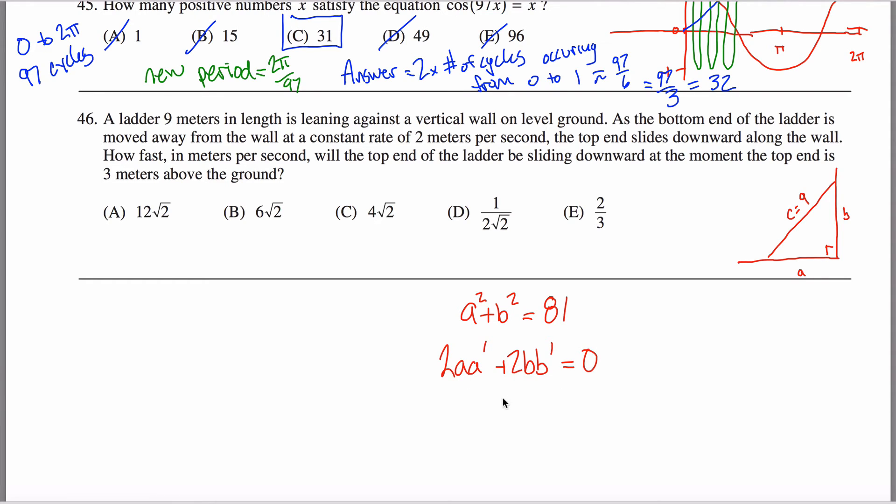What I now have is an equation that relates together A prime and B prime. When you read through the problem, the bottom end of the ladder is being moved away from the wall at a constant rate of two meters per second. What that tells me is that this length A right here is increasing at a rate of two. In other words, A prime equals two.